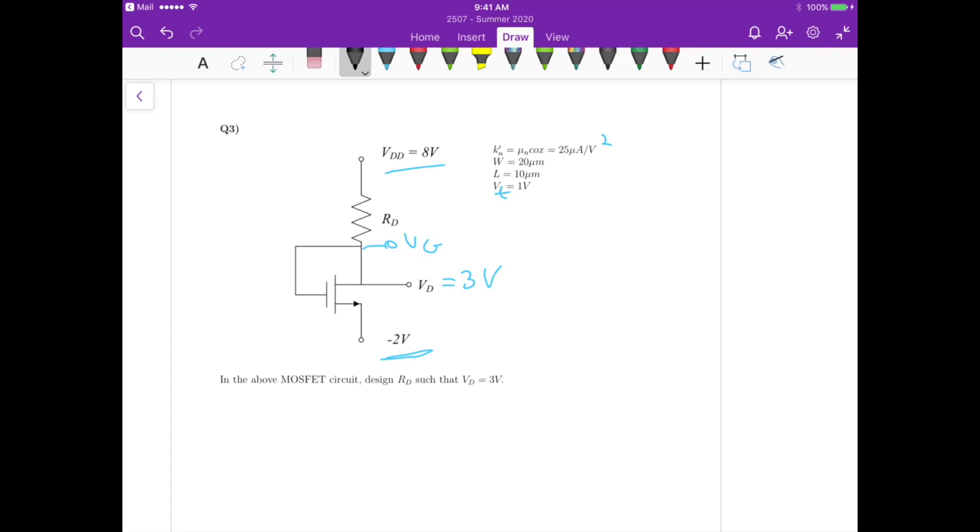So first we know, let's equate that, we know that VG is equals to VD which is given by the problem to be, it wanted to be 3 volts, and we also know that we have VS equals to minus 2 volts.